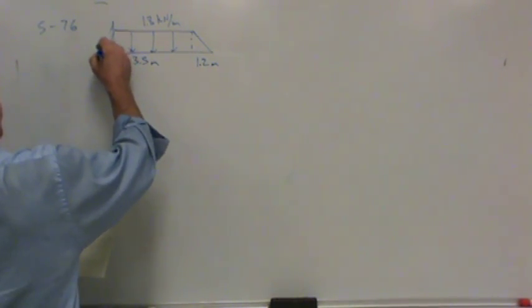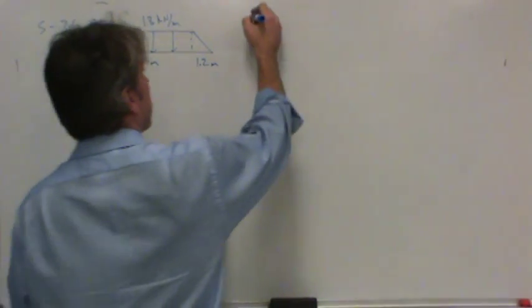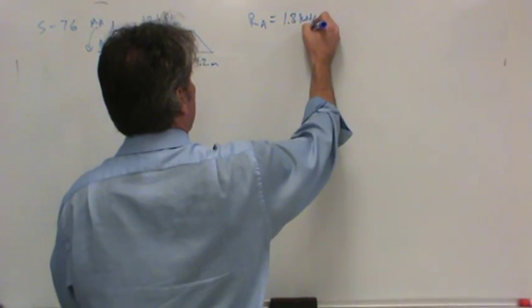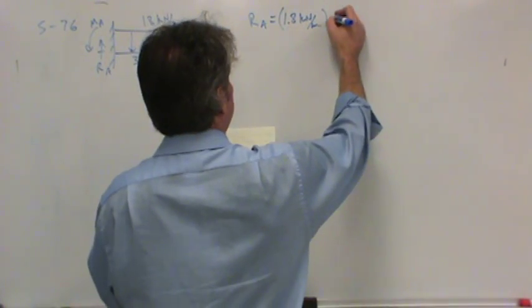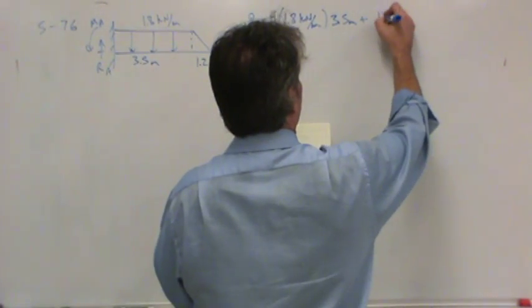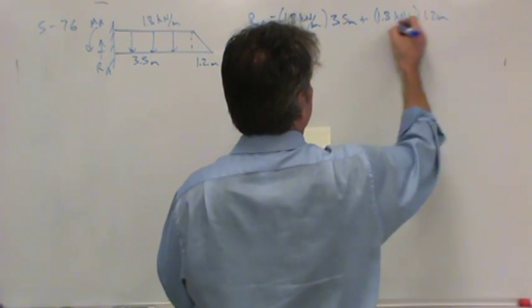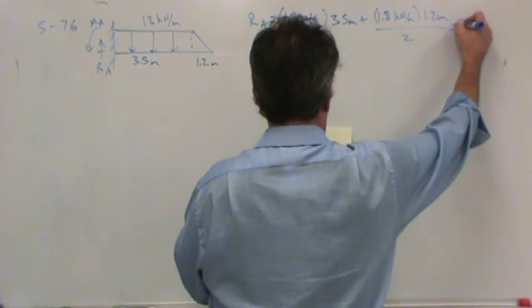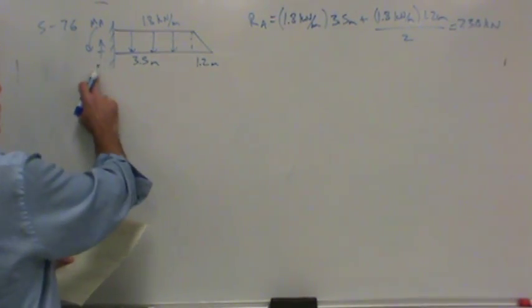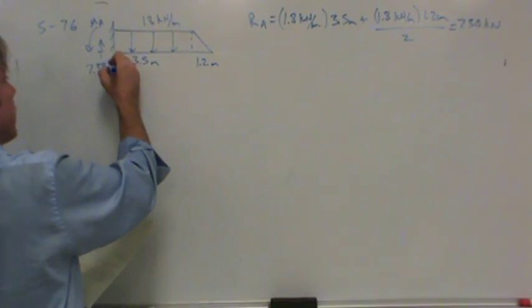We'll start by calculating reactions. There will be reactions at the wall on the beam. The reaction at A is 1.8 kilonewtons per meter multiplied by 3.5 meters worth, plus the area of this triangle down here, which is 1.8 kilonewtons per meter multiplied by another 1.2 meters. But it's a triangle, so we have to divide by 2. That comes out to 7.38 kilonewtons. So there's the total reaction force at the wall. Let me just erase it here and write it down, 7.38 kilonewtons.